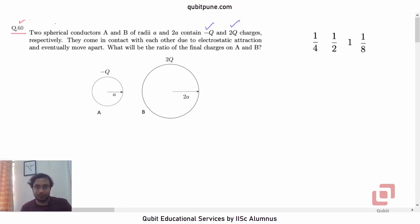To begin with, note that the radius of sphere A is half of radius of sphere B. So let us write it down here. Radius of A is small a, radius of B is 2A. Initial charges: what are the initial charges? Initial charges are negative Q on A and 2Q on B.